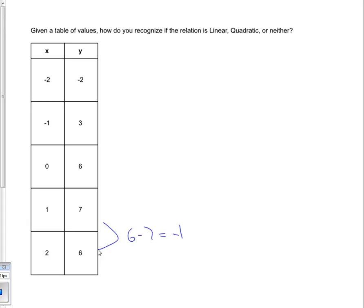Then I do 7 minus 6, that equals positive 1. If I then do 6 minus 3, that equals positive 3. And then I do 3 minus negative 2, and that equals positive 5.